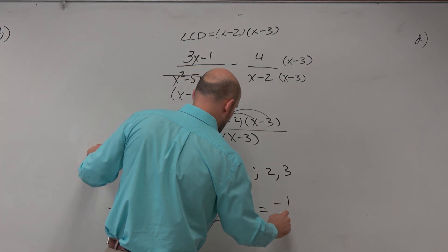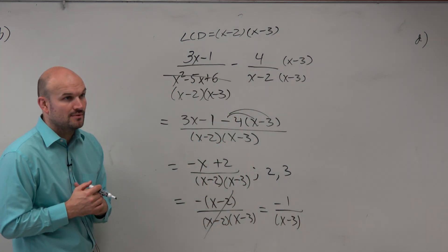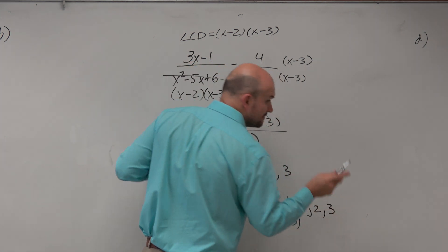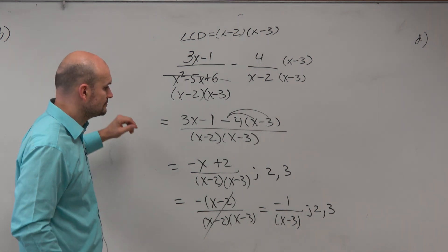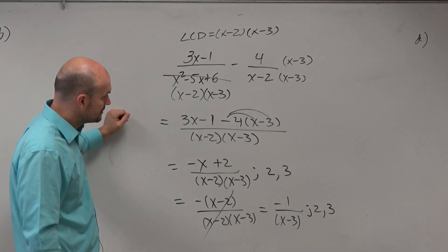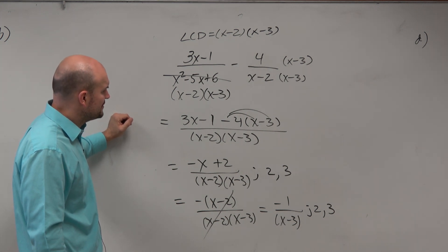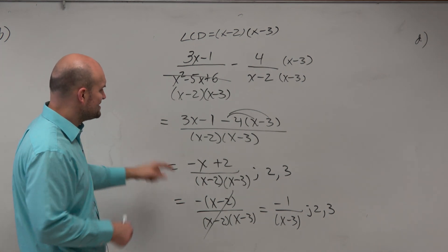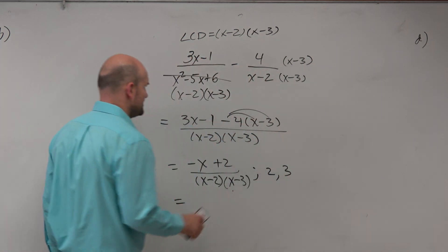So my final answer is negative 1 over x minus 3. Does that change the excluded values, though? No. The excluded values are still 2 and 3. Yes. Question? I have no idea why I stopped doing that. That should be 12, right? Yeah. I have no idea. I forgot about the 4. So dang it. That was a nice example, though. I like that, how that works. Dang it. Good catch, though. Thank you.